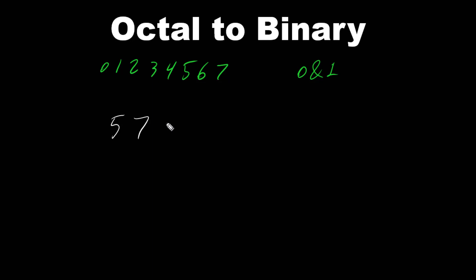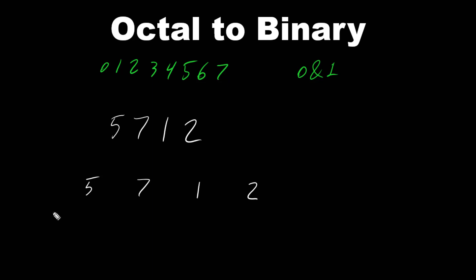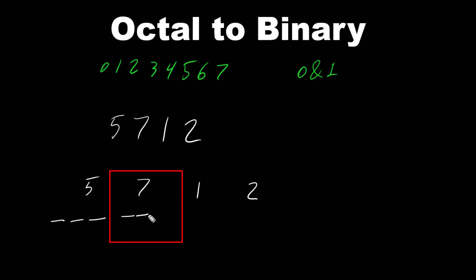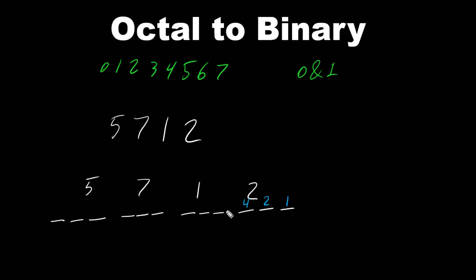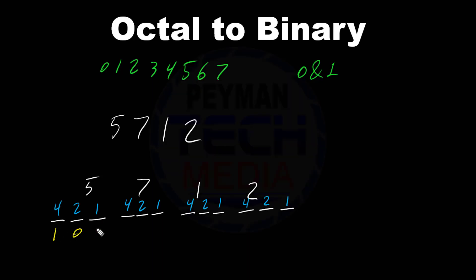Now let's say we have the octal number 5 7 1 2 and we want to convert it to binary. First, we separate the digits: 5, 7, 1, 2. Then we assign 3 bits per octal digit with decimal values 1, 2, 4 for each group. We determine which bits to turn on: for 5 we need 4 and 1, and for 7 we turn on all of them.